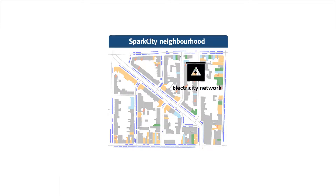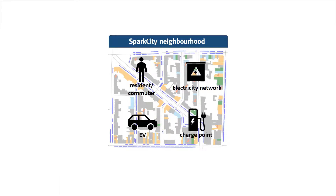Inside this Spark CD neighborhood there are some agents living, and we simulate those agents. The first agent that we simulate is a resident or commuter — people that live inside or work inside the neighborhood. We also simulate electric vehicles; some of the residents or commuters might own an electric vehicle, and those are the vehicles of interest for our model. Lastly, we add charge points to the neighborhood where the electric vehicles can be charged.